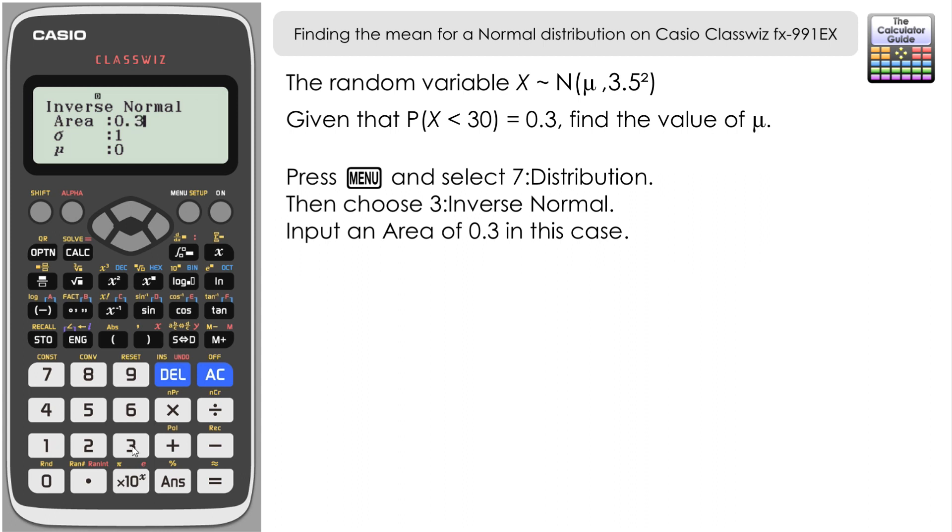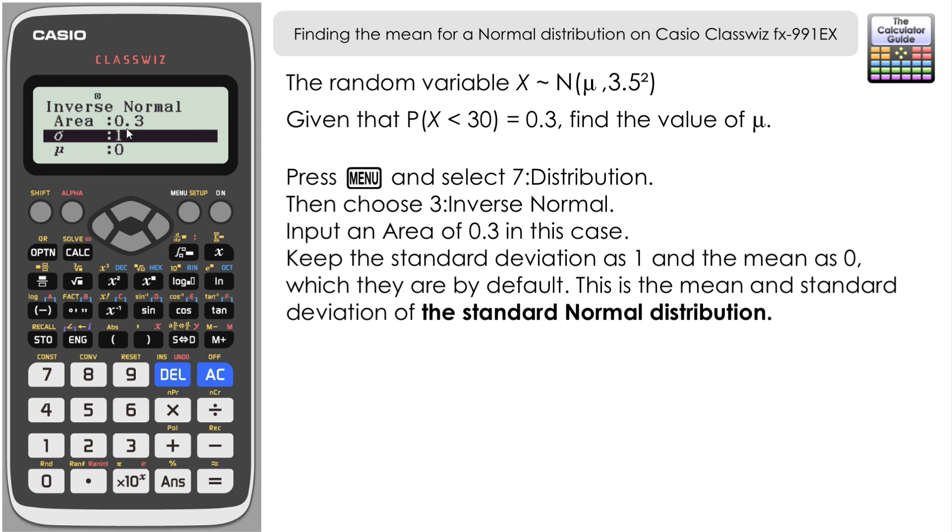Now in terms of the x value that we have there, 30, we're actually going to use that in a second part of the calculation. For the mean and standard deviation that we're going to input into the inverse normal, we're going to use the standard distribution which it is set to by default. As you can see the standard deviation is 1 and the mean is 0, which is just the standard normal distribution which is going to help us out for this particular question. So we're going to keep those as default, so press equals to confirm.